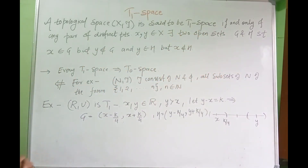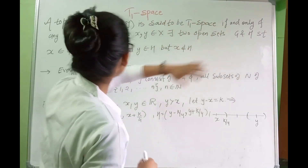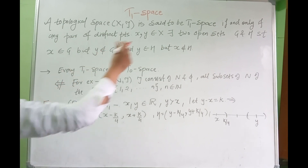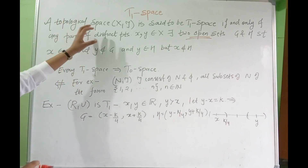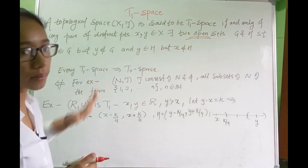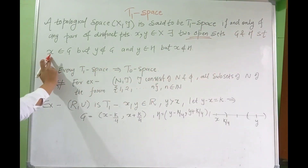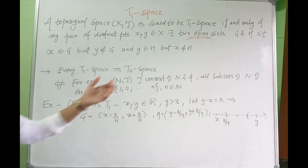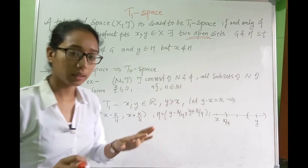So what is T1 space? Let X, T be a topological space. It is said to be a T1 space if and only if for any pair of distinct points X and Y belonging to X, there exist two open sets G and H such that X belongs to G but Y does not belong to G, and Y belongs to H but X does not belong to H.